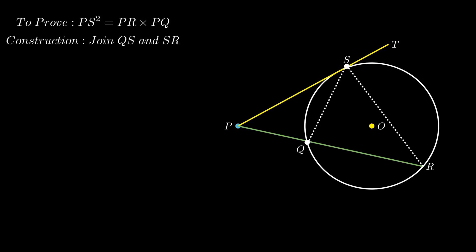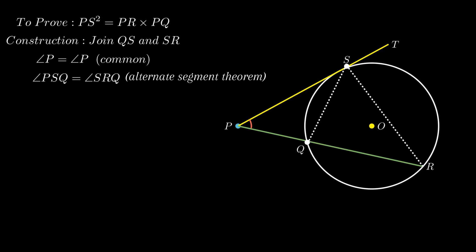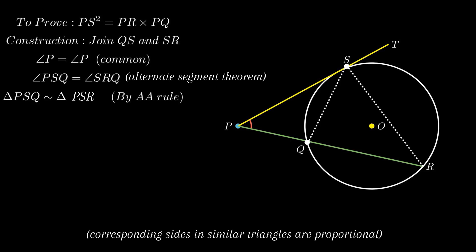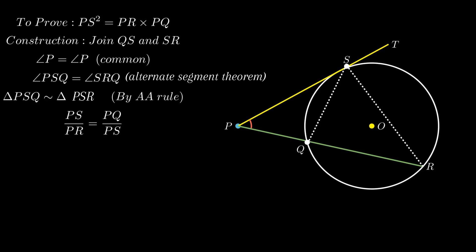Now in triangles PSR and PQS, angle P is the common angle, and angle PSQ equals angle SRQ by the Alternate Segment Theorem. Therefore by the AA similarity axiom, triangle PSQ is similar to triangle PSR. Since corresponding sides in similar triangles are proportional, the ratio of PS to PR equals the ratio of PQ to PS. On cross multiplication we get PS² equals PR × PQ. Hence the theorem is verified.